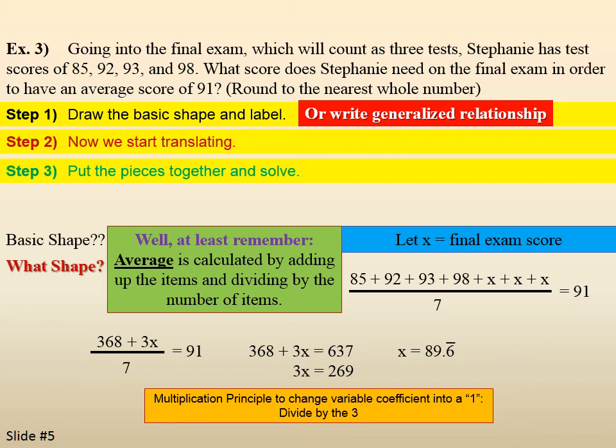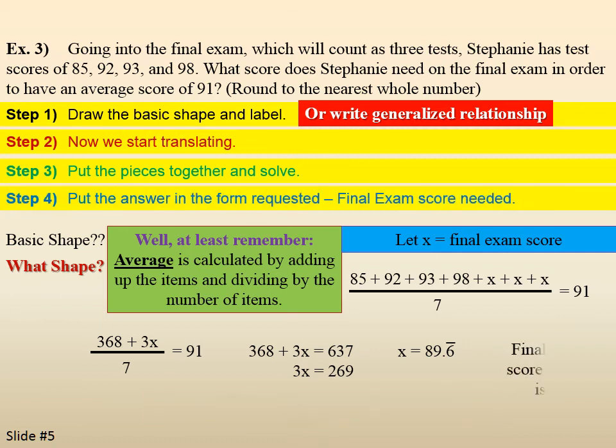And, we get x equals 89.6 repeating. So, 89.6 bar. Step four, put the answer in the form requested. Rounding to the nearest whole number. The final exam score needed is a 90.